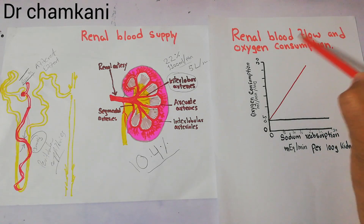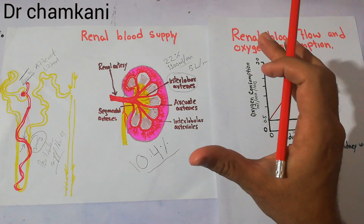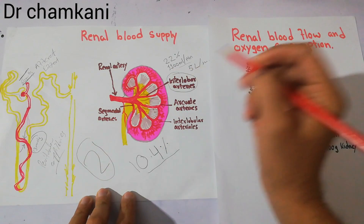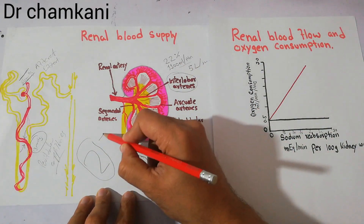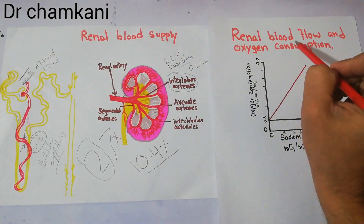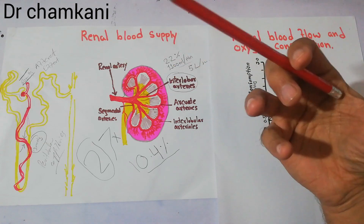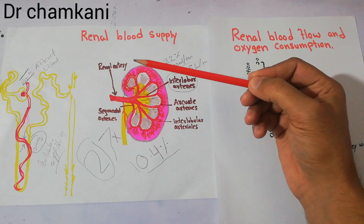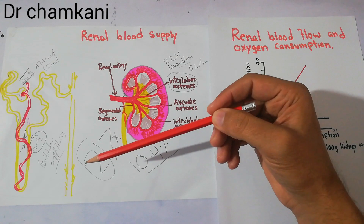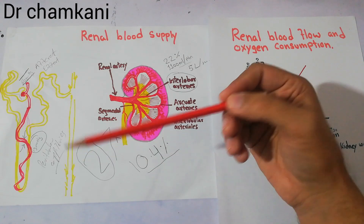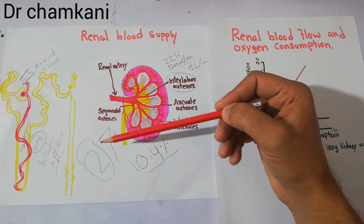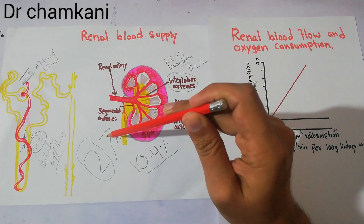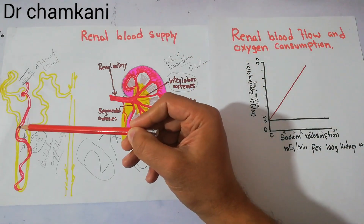Coming to the oxygen consumption of the kidney: when compared with the brain — one of the organs that needs a lot of oxygen — the kidneys need even more oxygen than the brain. The kidney's oxygen demand is about double that of the brain, but the supply of oxygen to the kidneys is seven times higher. The purpose of supplying such high blood flow and oxygen to the kidneys is to help them reabsorb sodium.